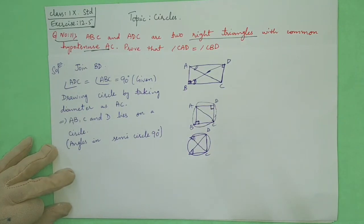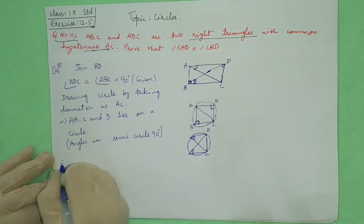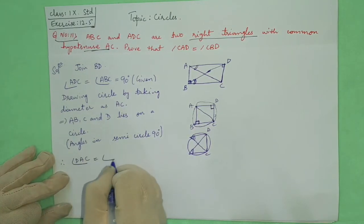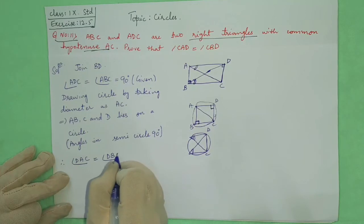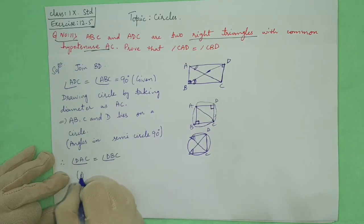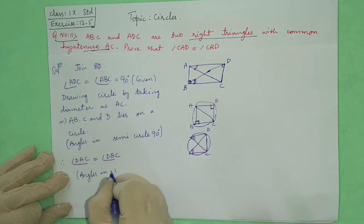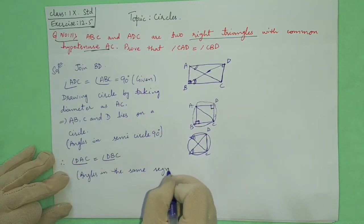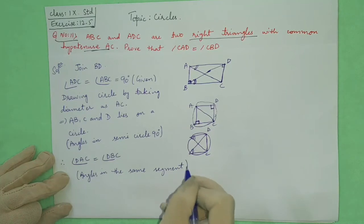All angles will be equal. Angles in the same segment will be equal. So we can write therefore angle DAC is equal to angle DBC. Why? Because angles in the same segment will be always equal. So this is your required result.